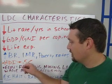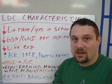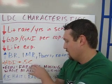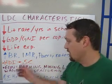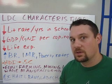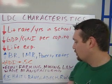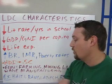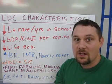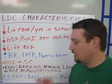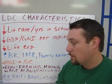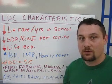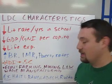Their HDI is usually less than 0.5, but that's not a hard and fast rule — this can vary. Their economy is really based around farming, mining, and very low-wage manufacturing jobs. Some example countries that fall into this category are Haiti, Bangladesh, and Rwanda.